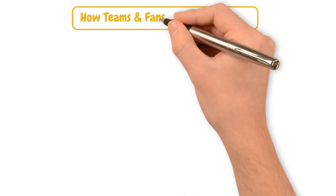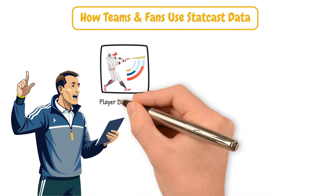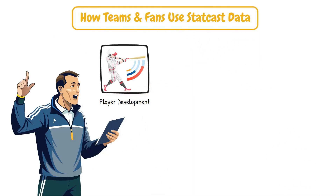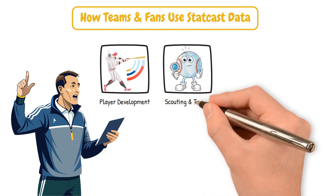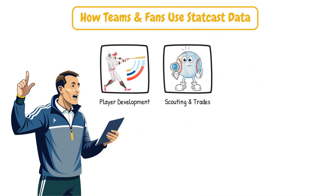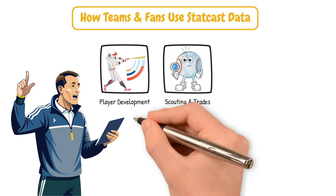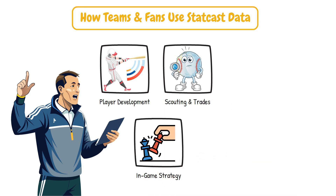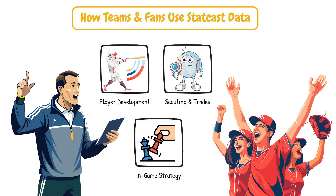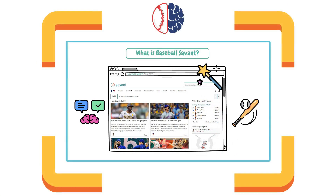Overall, MLB teams and analysts use StatCast data for player development — identifying weaknesses and optimizing training — scouting and trades, finding undervalued players based on StatCast trends, and in-game strategy, including pitching matchups, base running decisions, and the now-restricted defensive shifts. For fans, Baseball Savant is the best place to explore StatCast metrics on your own.